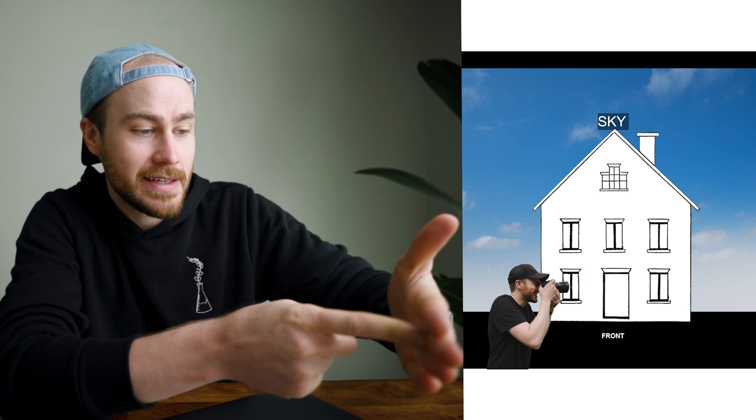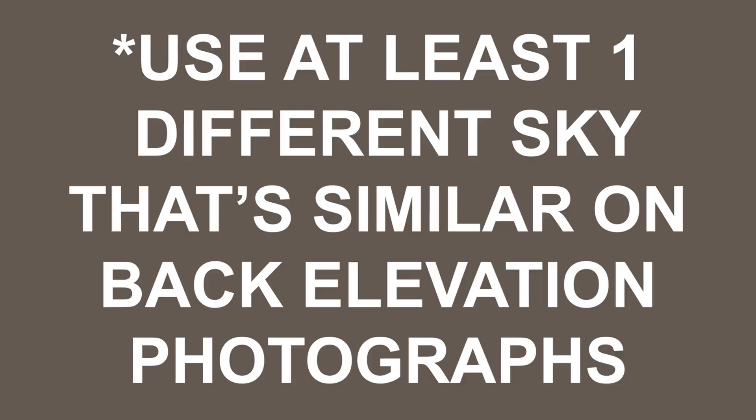One way you can use the same sky but change it enough to where it looks right — you've got to think: here's the house, here's the sky behind it. Whenever you're shooting from one angle, you'll be catching this part of the sky. So I'll zoom in on my screen to make the sky bigger and scoot it over to get that part of the sky in the photo. Same thing when you're straight on, I'll have it straight on behind the house. And when you're over on the other side, I'll scoot it over a little bit too. That way it looks like you literally just moved and caught different parts of the sky at different angles.